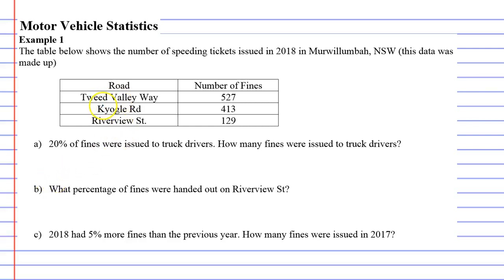Motor vehicle statistics, example one. Below we have a table that shows the number of speeding tickets issued in 2018 in Merwoola, New South Wales. This data is just made up, but it's going to help us work through these questions. We've got three roads, and each road has a different number of fines that people received.